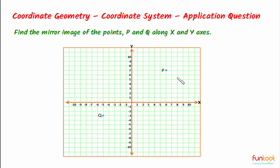An important point to remember: when finding the mirror image of any point along the X axis, the X coordinate remains the same while the Y coordinate becomes the negative of itself. Similarly, when finding the mirror image along the Y axis, the Y coordinate remains the same and the X coordinate becomes the negative of itself. Let's take point P first.